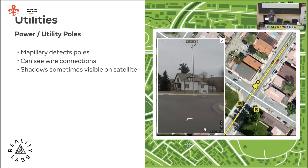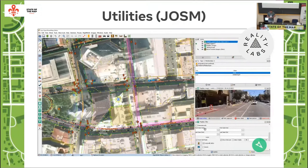Moving into utilities, I used Mapillary's detected utility poles as guides — similar to what YouthMappers have done in Sierra Leone. You can check the imagery for verification and, in a small town, it's easy to identify which street corner or house a pole is near. You can even map the wire connections between poles to build a full power grid network, though I didn't go that far. Utility pole shadows visible in sunny satellite imagery also help confirm positions.